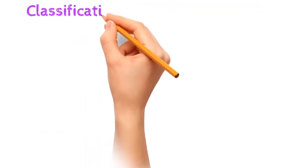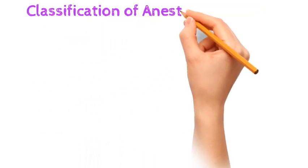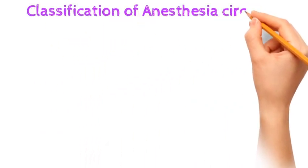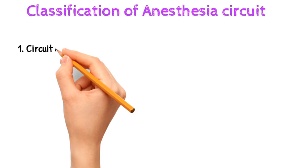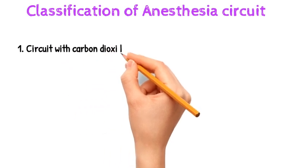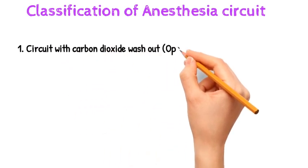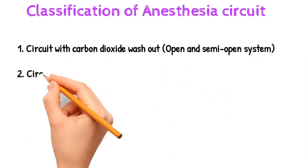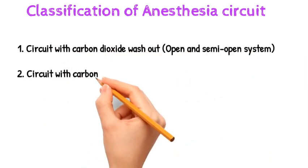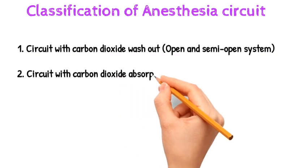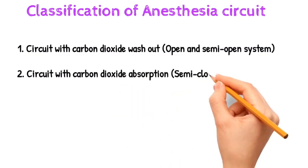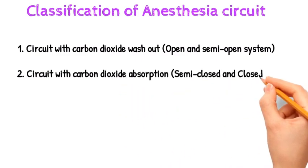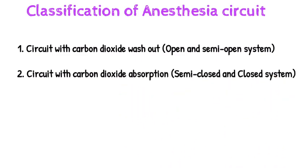Classification of anesthesia circuits: circuits with carbon dioxide washout include open and semi-open systems. Circuits with carbon dioxide absorption include semi-closed and closed systems.